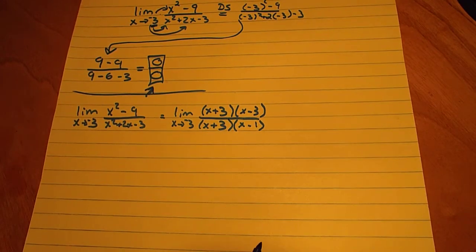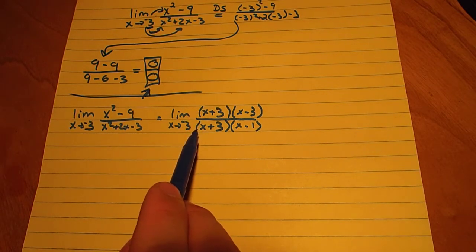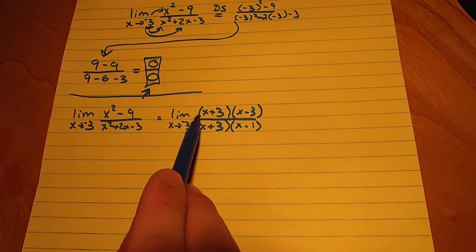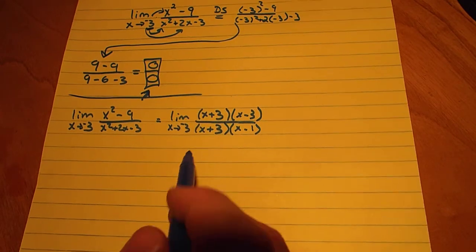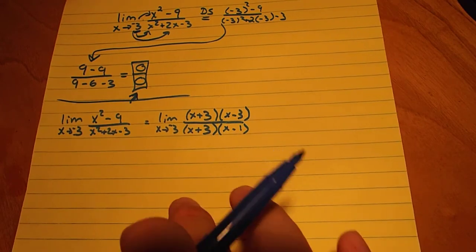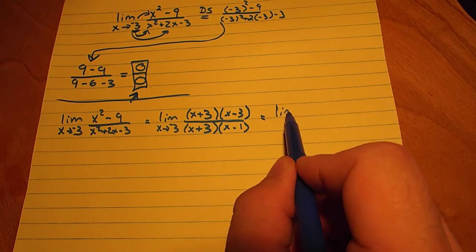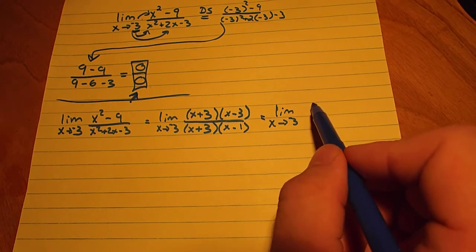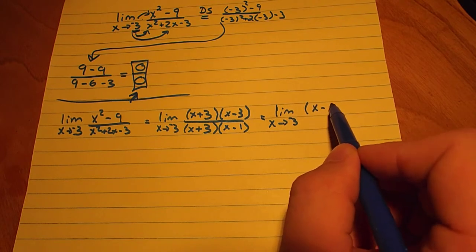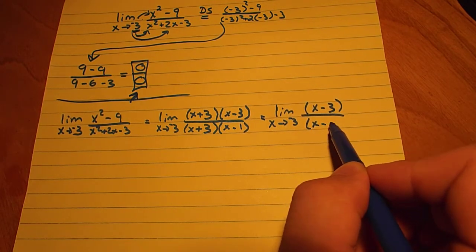Alright, so now from here we can see that something starts to work out. We see we have two x plus 3s on both sides of the fraction, which we know will reduce down to 1. So if we reduce this, we get the limit as x approaches negative 3 of x minus 3 over x minus 1.